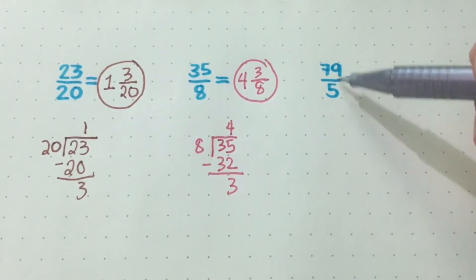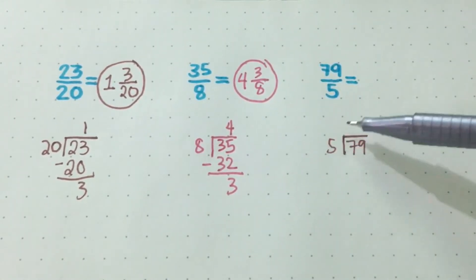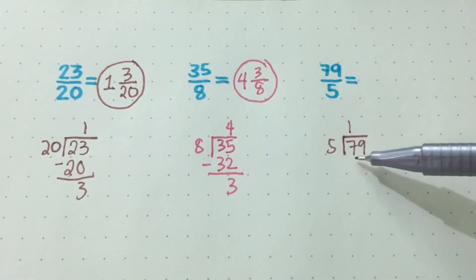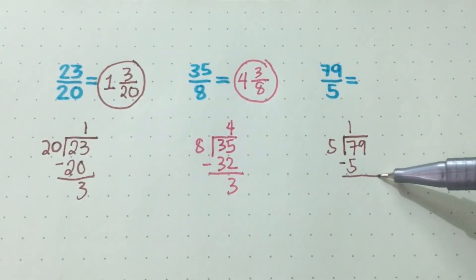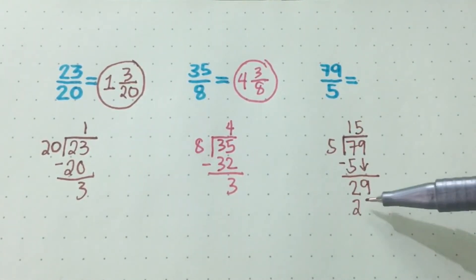Last try. 79 over 5. So it means that we'll be dividing 79 by 5. So 7 divided by 5, that's 1. 1 times 5, that's 5. Subtract. 7 minus 5, that's 2. Bring down 9. 29 divided by 5 is 5. 5 times 5 is 25.